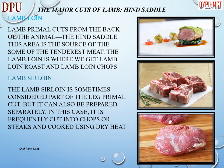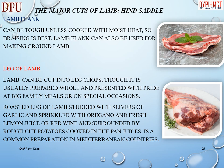The major cuts of lamb — hind saddle: the lamb loin is the source of some of the tenderest meat, where we get lamb loin roast and lamb loin chops. The lamb sirloin is sometimes considered part of the leg primal cut but can also be prepared separately, frequently cut into chops or steaks and cooked using dry heat. Lamb flank can be tough unless cooked with moist heat, so braising is best. Lamb flank can also be used for making ground lamb. Leg of lamb can be cut into leg chops, though it is usually prepared whole for big family meals or special occasions, often roasted with garlic, oregano, and lemon juice or red wine, surrounded by potatoes in the pan juices — a common preparation in Mediterranean countries.